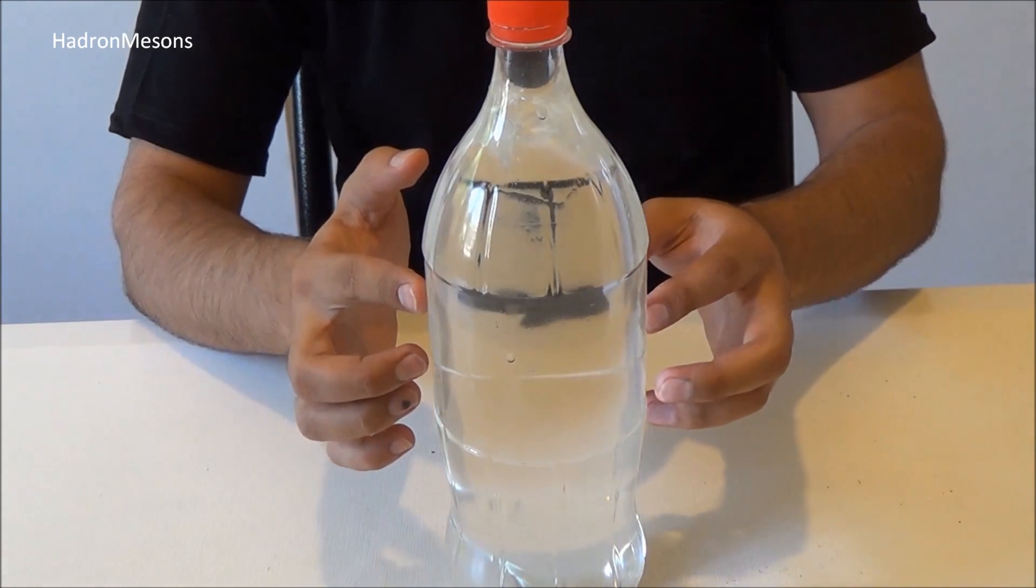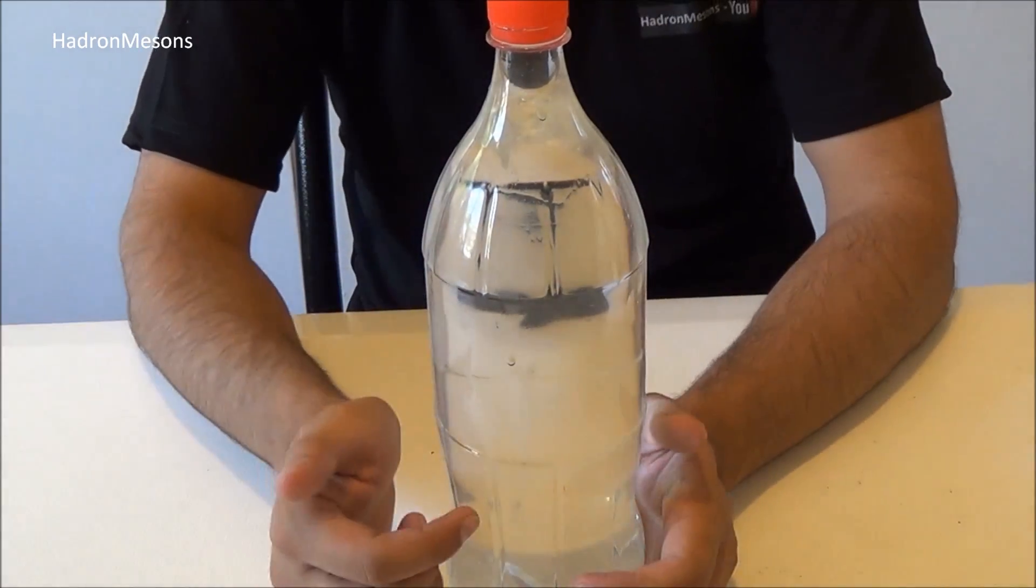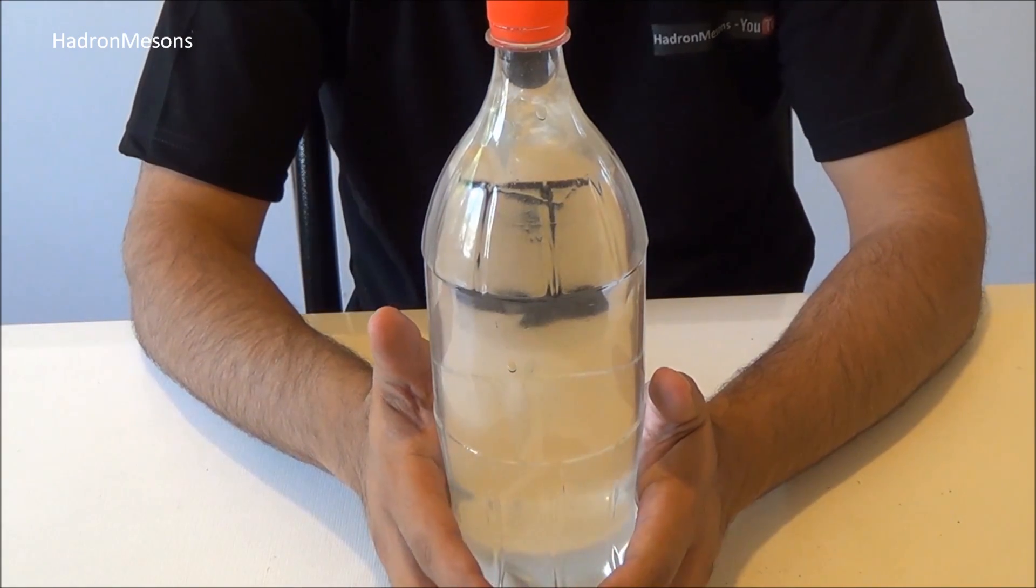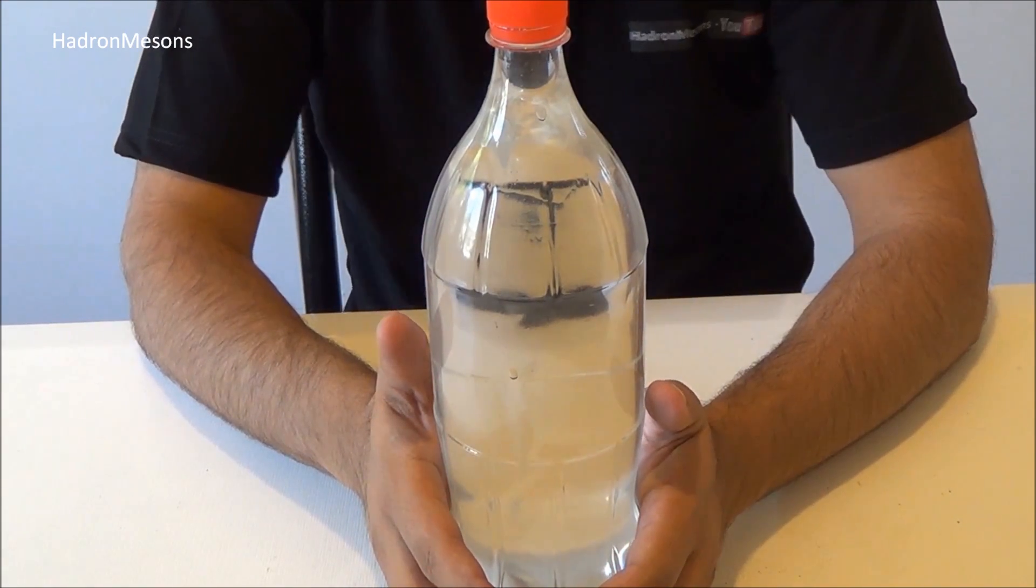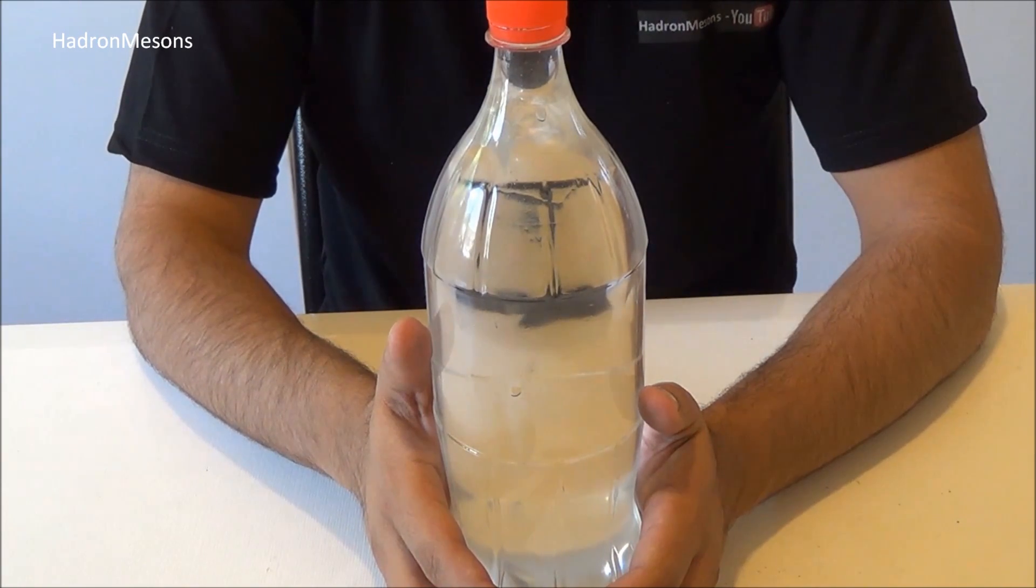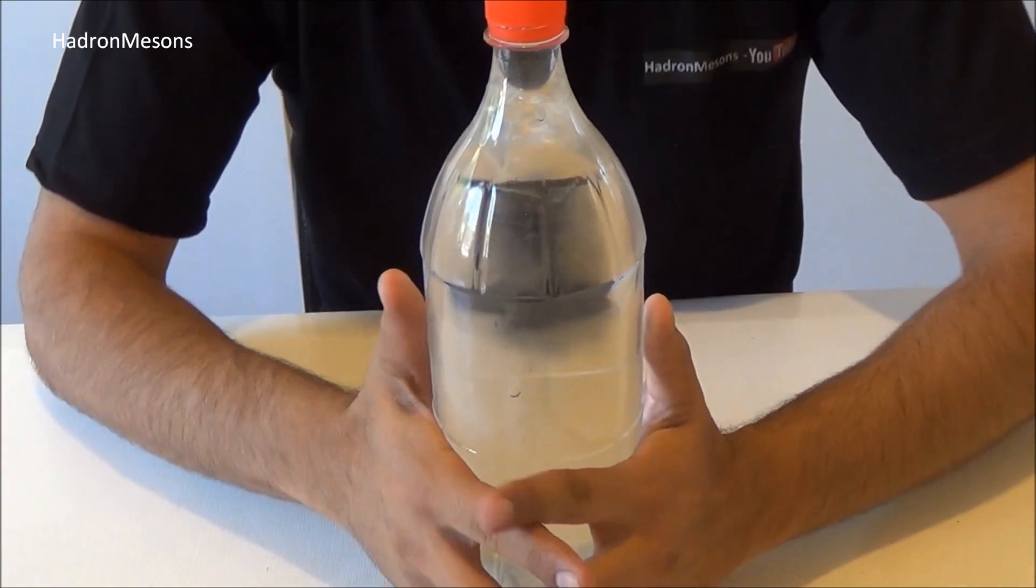Step 4: Now, in order to create artificial pressure inside the bottle, take the bottle with your hands and start pressing it. I'm counting from one to three, then I'll start pressing the bottle. One, two, three.